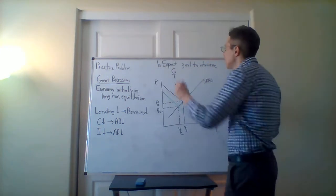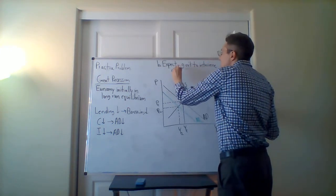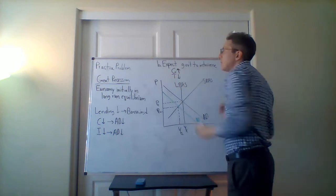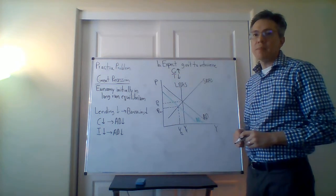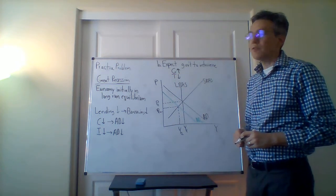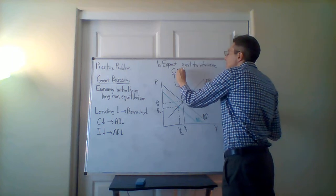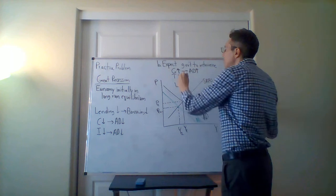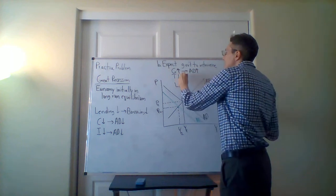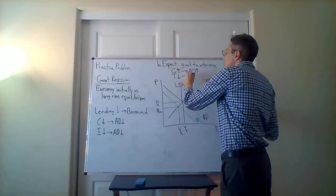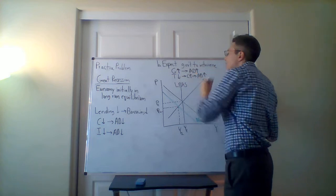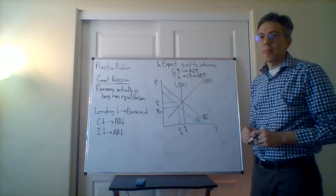What they would do is basically a stimulus, like we were talking about before, where we have government spending going up and taxes falling. What this would mean is that aggregate demand would go up, because tax decreases cause consumption to increase — that's another reason why aggregate demand would go up.